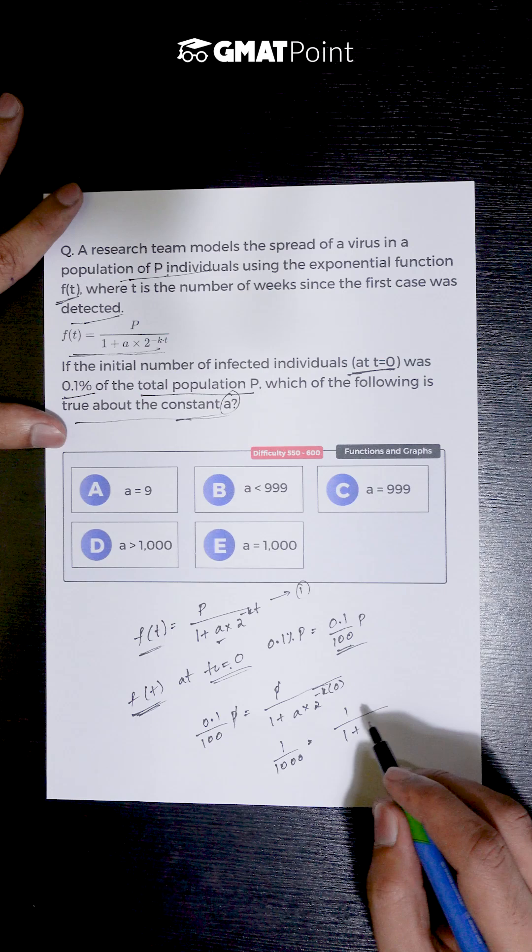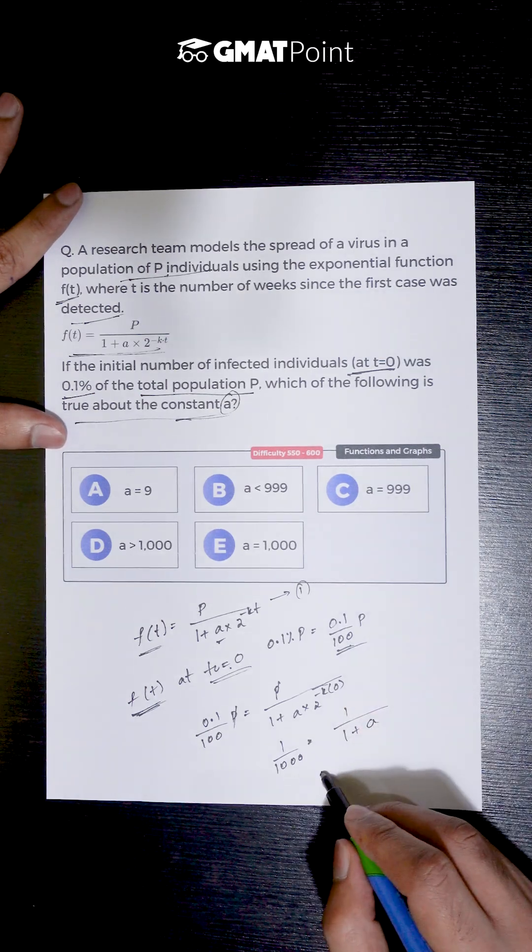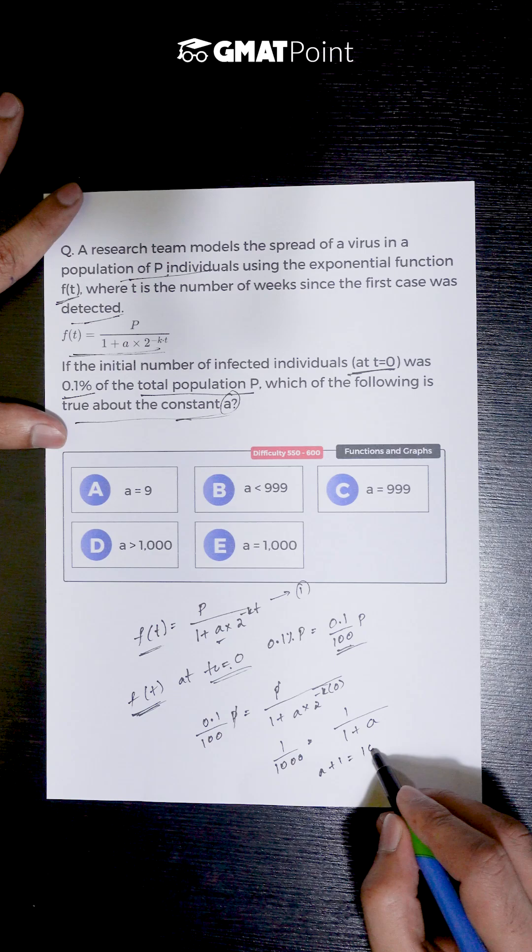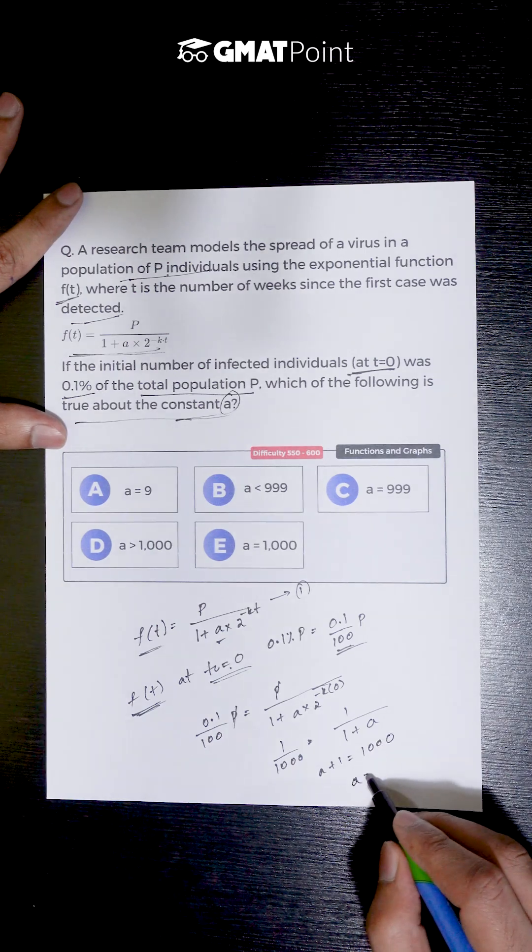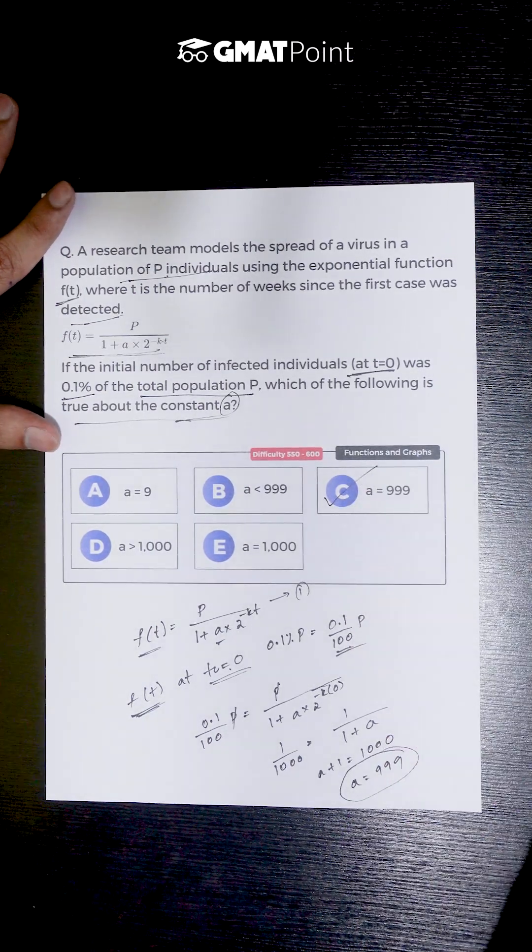We will have the value of a plus 1 equal to 1000, and the value of a is nothing but 999. So the correct answer is option C.